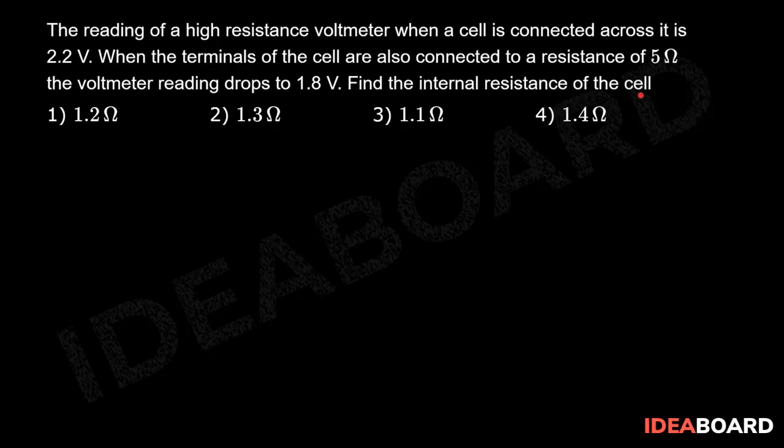So here, E (EMF of the cell) is equal to 2.2 volts, V is equal to 1.8 volts, R is equal to 5 ohms. Now, the expression for internal resistance of the cell: